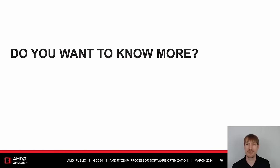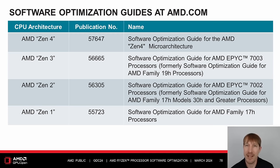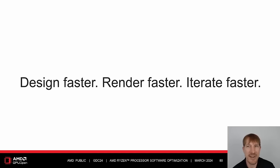Do you want to know more? Discover your best graphics performance by using our open source effects, SDKs, tools, and tutorials at gpuopen.com. Software optimization guides for Zen 1, Zen 2, Zen 3, and Zen 4 are available in the AMD documentation hub at AMD.com. Got questions? Email us — we'd love to hear from you. Design faster, render faster, iterate faster. We can't wait to see what you create.